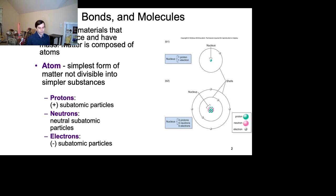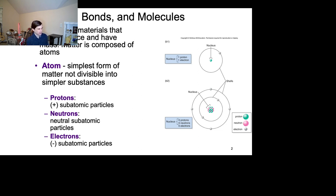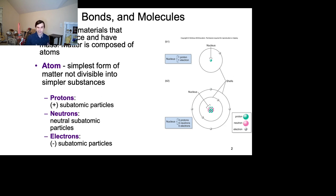A bunch of matter shoved together is going to make protons, neutrons, and electrons. You've probably heard those terms before. Protons, neutrons, and electrons are the three things that make up an atom. They are also composed of smaller things which are made of matter. An atom is kind of the smallest thing that you can identify as a pure substance that you can't cut in half — and if you do cut it in half, it's not that thing anymore.